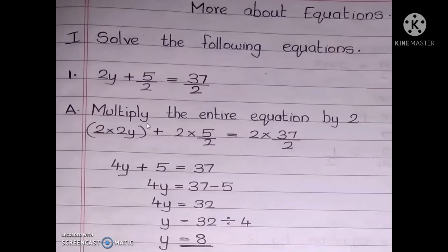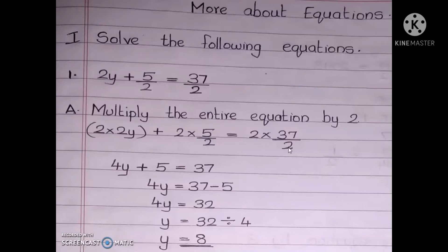The first step is to multiply the entire equation by 2. 2 is the denominator of the fraction, so you are going to multiply the entire equation with 2. So this is the step: 2 into 2y, plus 2 into 5 by 2, equal to 2 into 37 by 2.